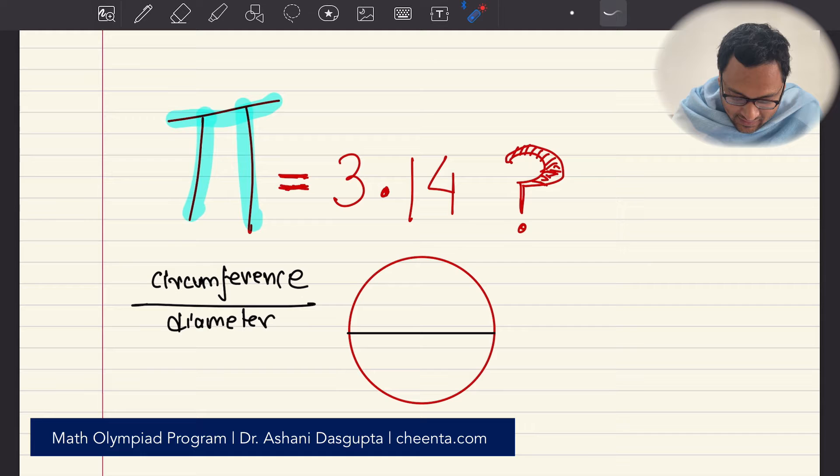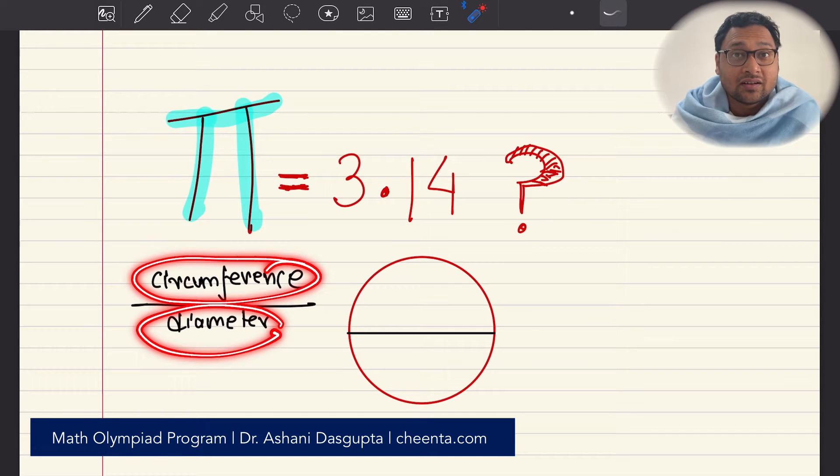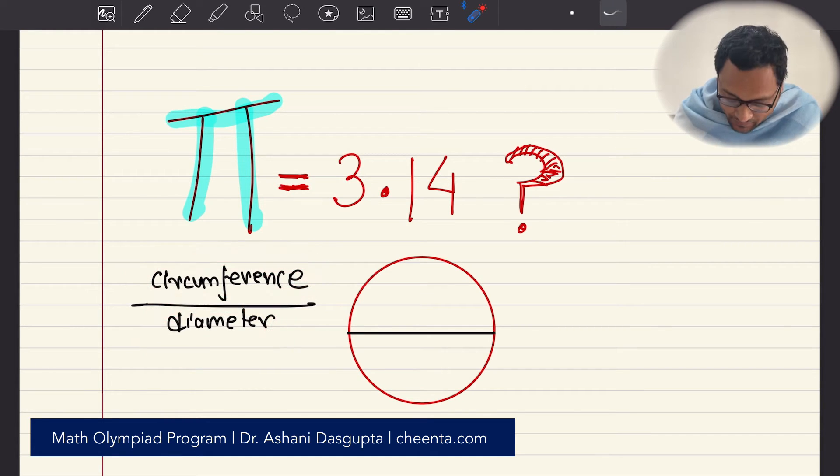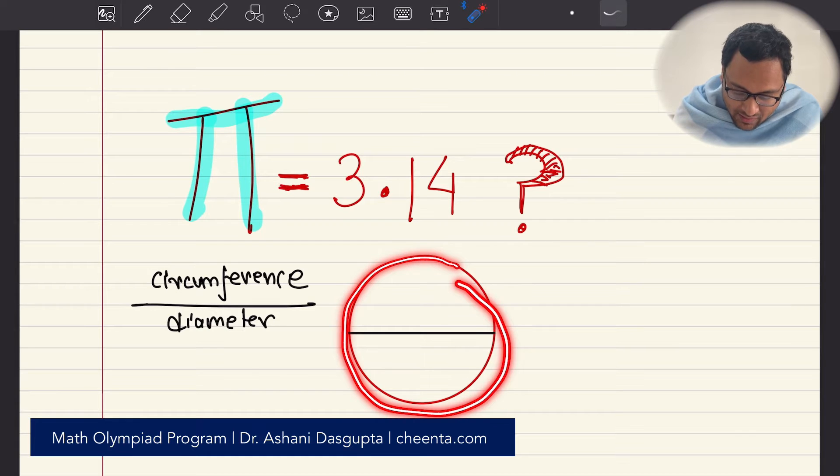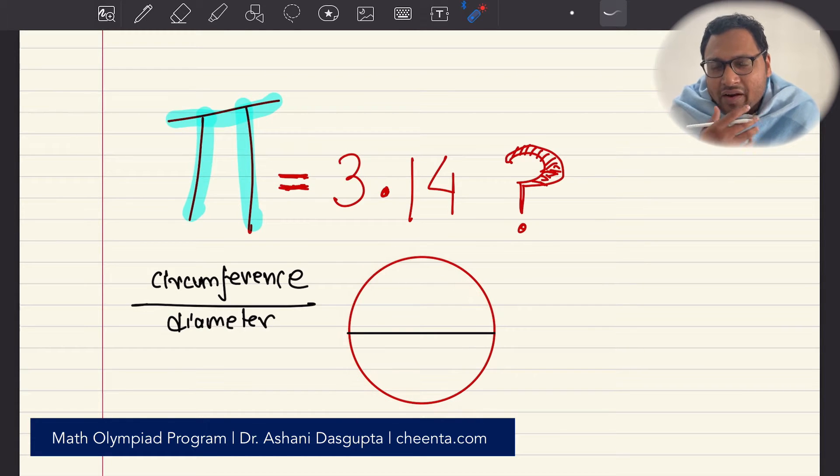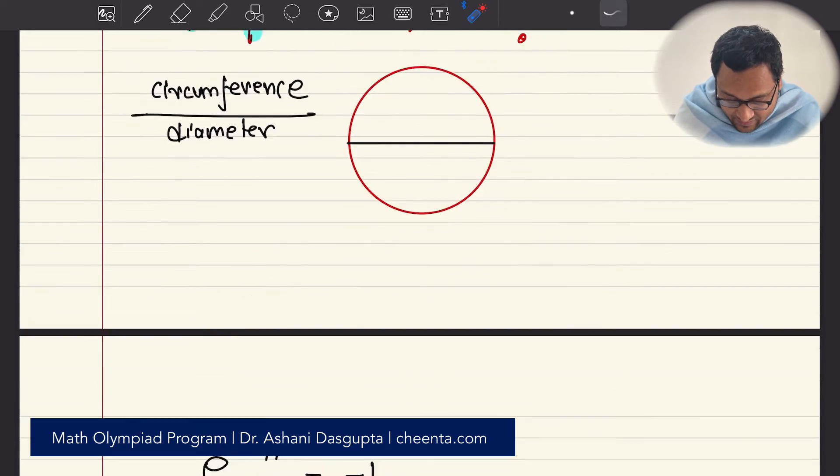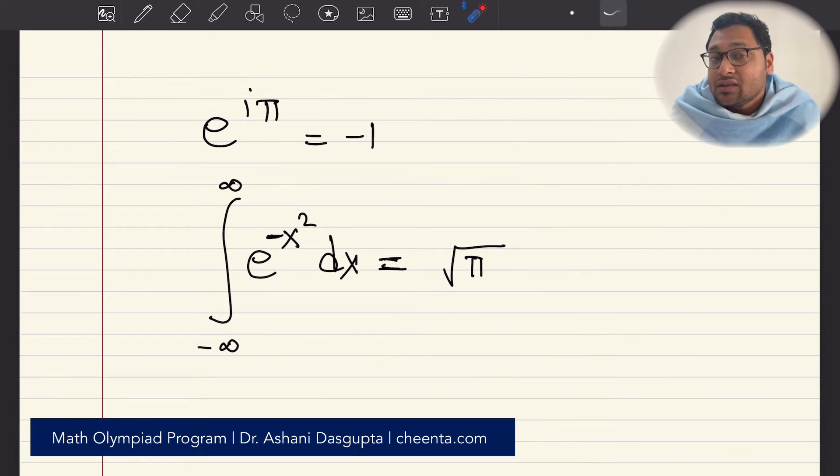It's the circumference by diameter of any circle. But there is a very interesting place of pi in all of mathematics. It comes up in unexpected places like these two formulas which are two of my most favorite formulas in all of mathematics.